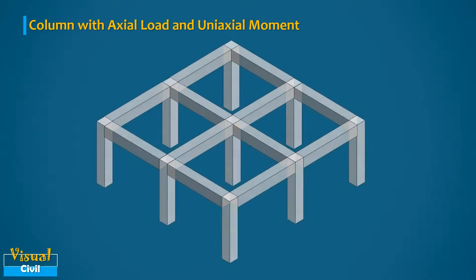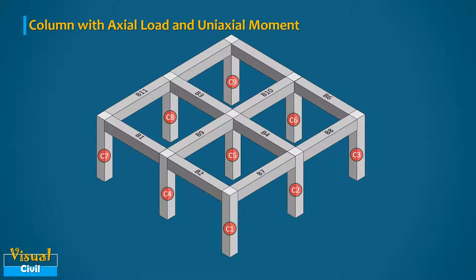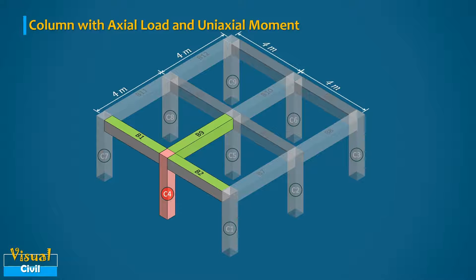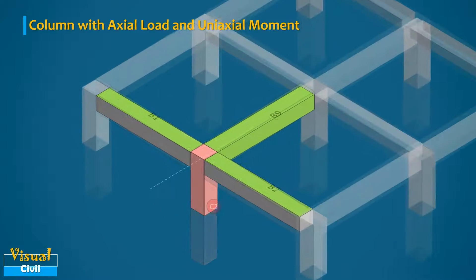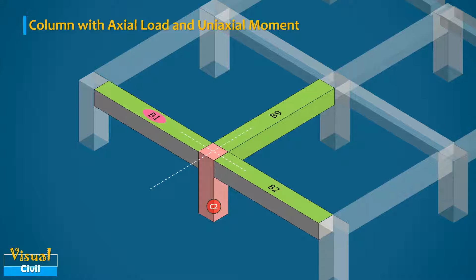To find this type of column in a building frame, consider a building frame with 9 columns and 12 beams, with center-to-center spacing of 4 meters. Consider column C4, connected by beams B1, B2, and B9. Beams B1 and B2 have the same span and are connected along the same axis on opposite sides, so their moment effects on C4 cancel. Only beam B9 is on one side with no beam on the opposite side, hence moment acts on the column due to B9 along the beam line.